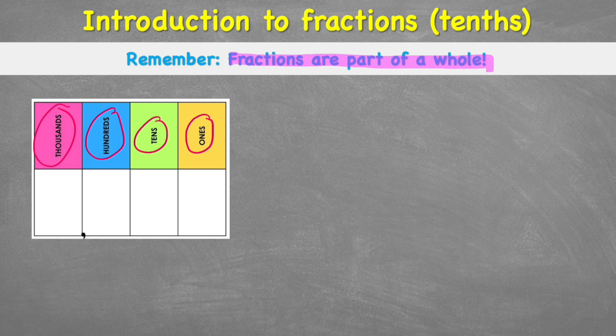Well, our place for our fractions actually comes after the ones. Because remember, a fraction is smaller than one. It's a part of one. So we would end up having to put this extra section that we will then call tenths. And don't forget we would need our decimal place between them. This decimal point shows that we're now less than one and we're into fractions.